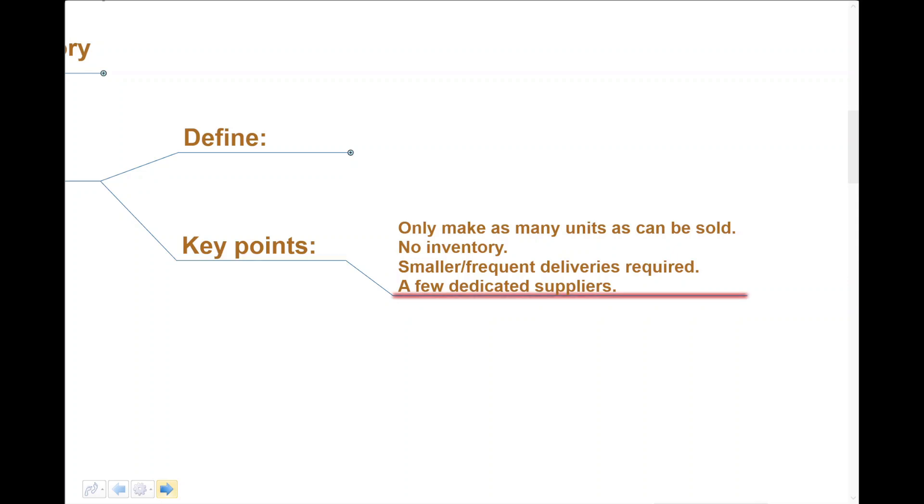Bottom line is, with this sort of approach to inventory management, we only make as many units as has been sold. We basically get an order in, we order our inventory, we make the unit, we sell it. So broadly speaking, we're talking about no inventory here. In addition to that, clearly if we're ordering as we need, then smaller or more frequent deliveries from suppliers are going to be required. Dedicated suppliers are needed because if we don't have good links, good communications, and reliable dedicated suppliers, just-in-time is a waste of time. It's not going to work.